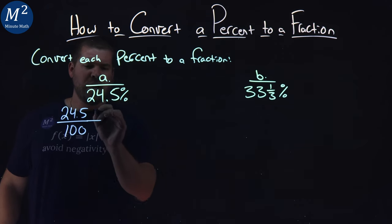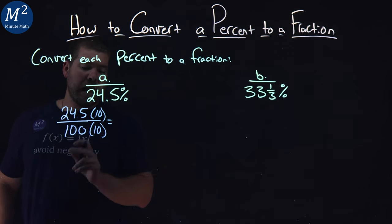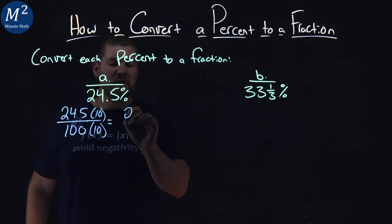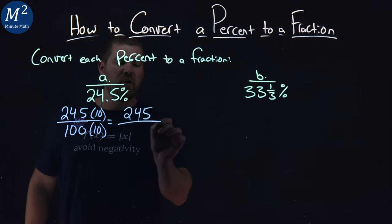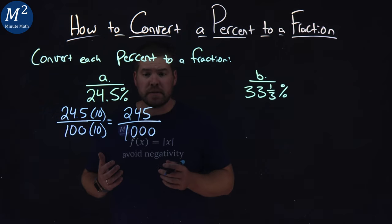If we take this fraction here, and we multiply the numerator and the denominator by 10, this allows us to move that decimal, instead of being 24.5, to be 245 over 1,000. Now, remember, all we're doing is creating equivalent fractions here.